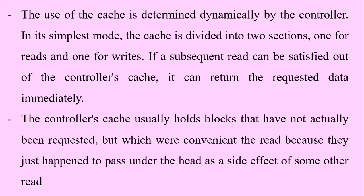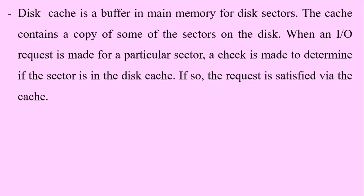The controller's cache usually holds blocks that have not actually been requested, but which were conveniently read because they just happened to pass under the head as a side effect of some other read. Disk cache is a buffer in main memory for disk sectors.